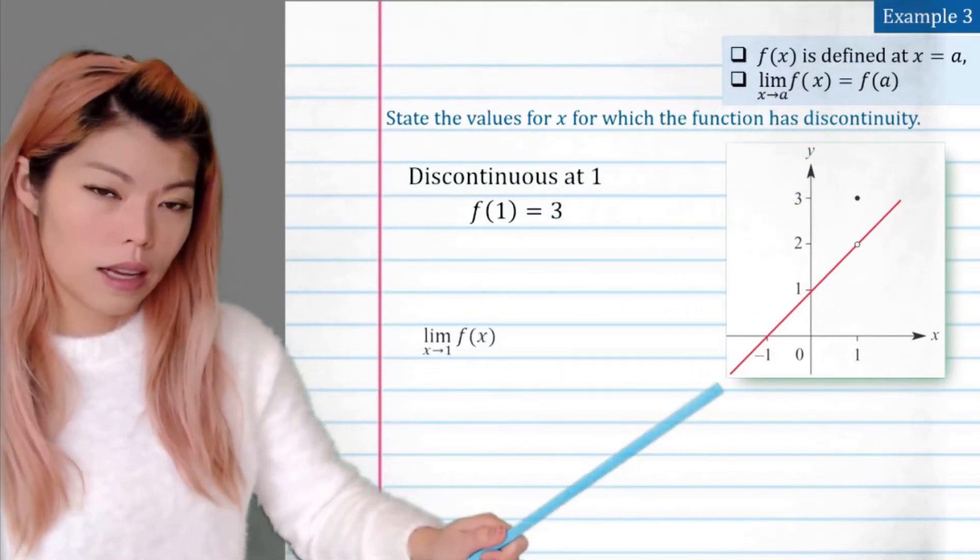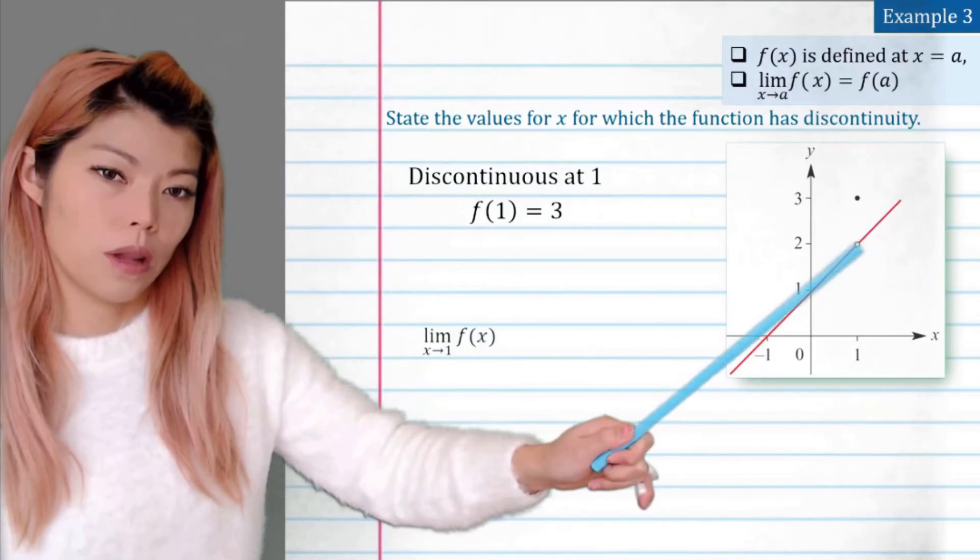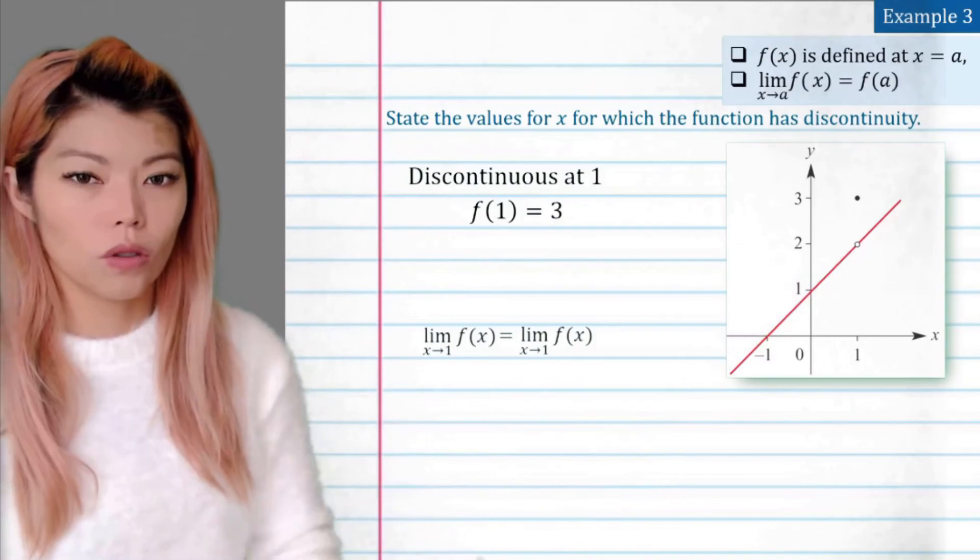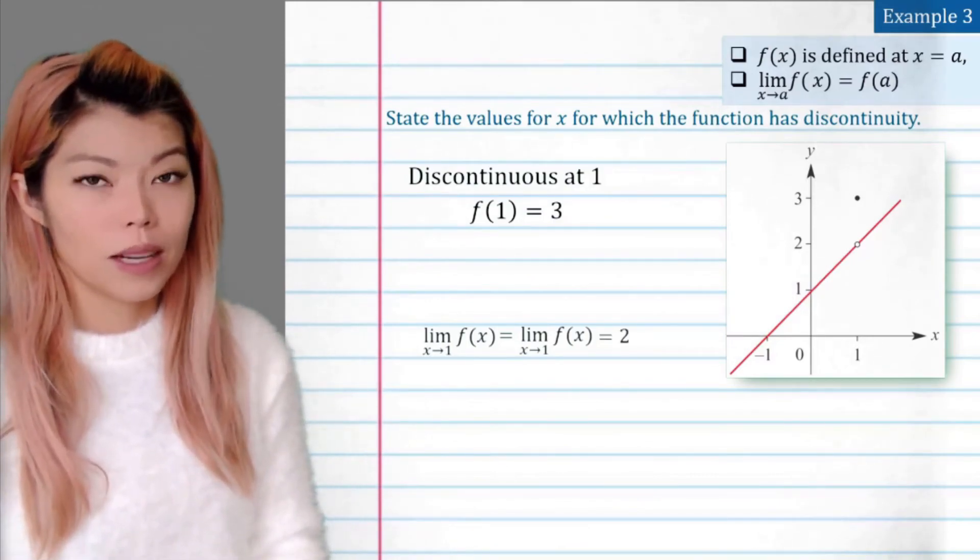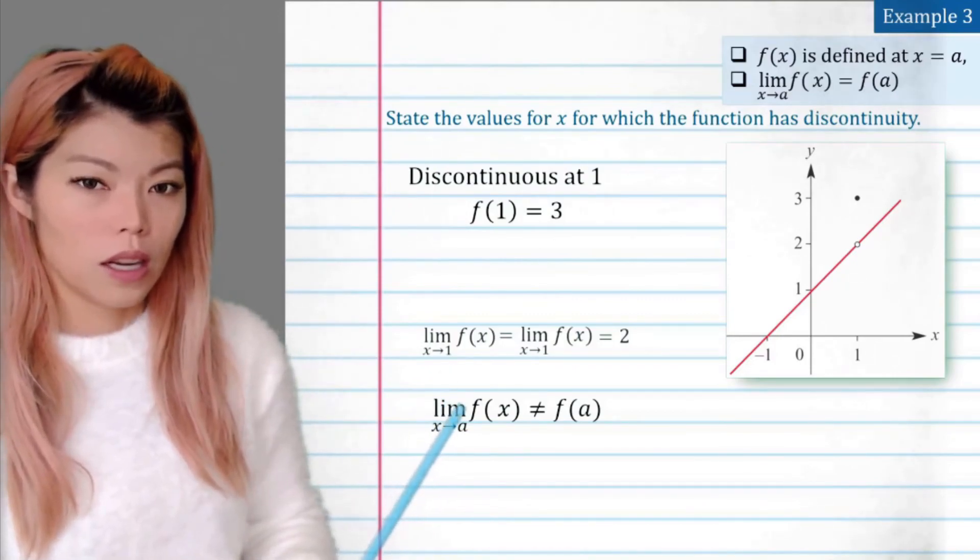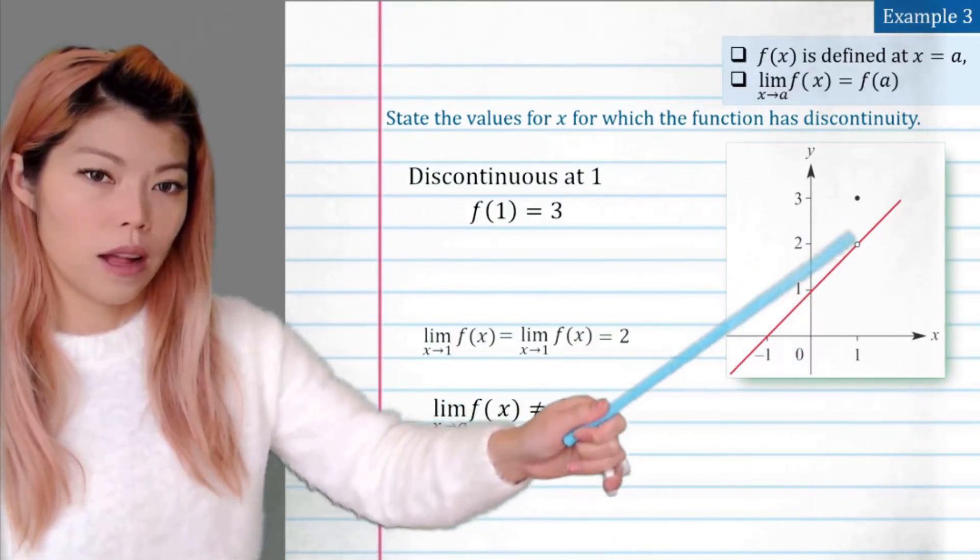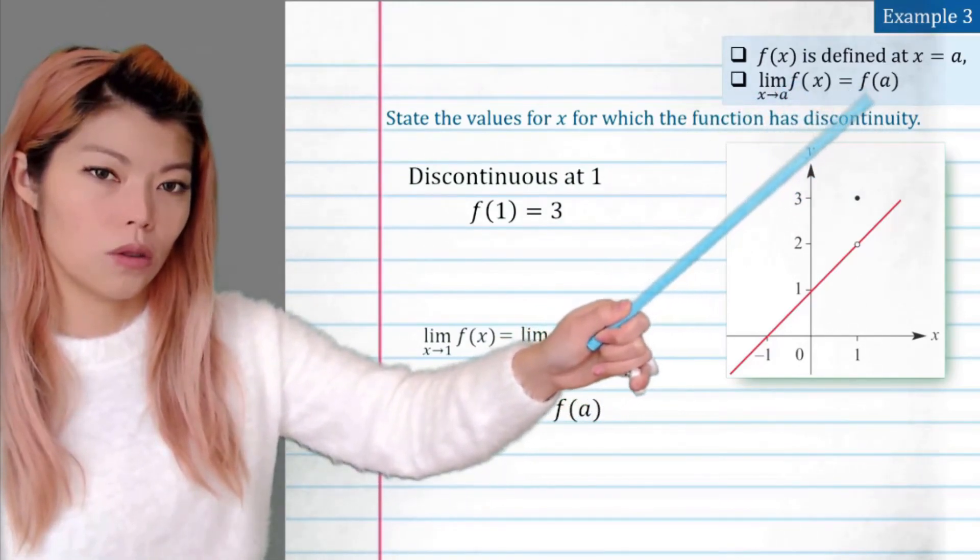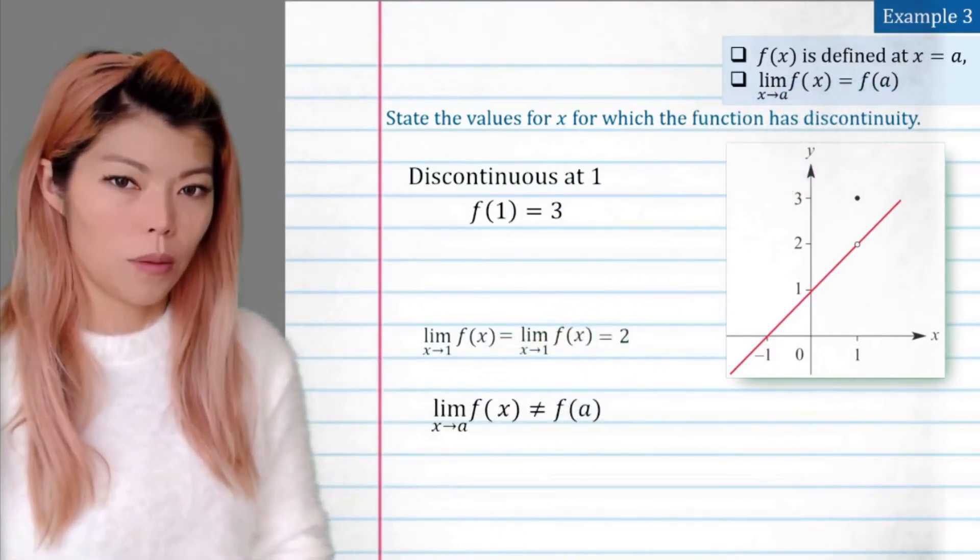But the limit as x approaches 1 from the left side is obviously 2. And as x approaches from the right side, it's also 2. So the left and right limit exists, and it is 2. So does the limit equal to what the y value is supposed to be? See, that's what it's saying in the second sentence. The limit should equal to what the y value is at that point.